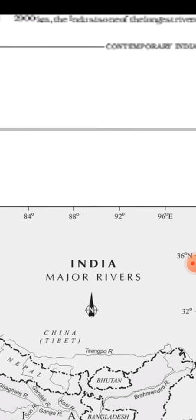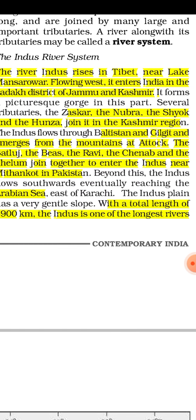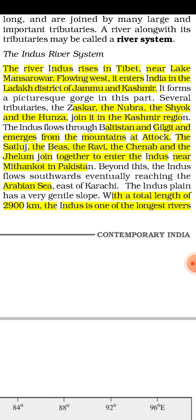The Indus river flows towards the west and enters India through Ladakh district. This is the Indian border where the Indus river enters India. It forms a picturesque gorge in this part of its course.